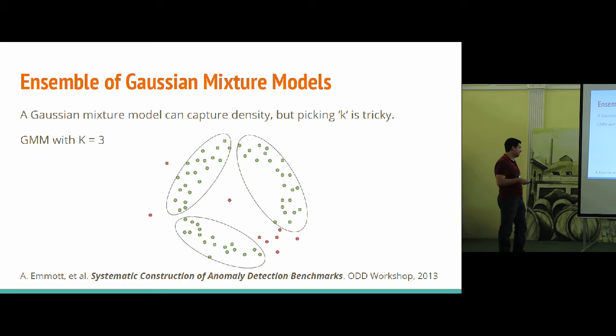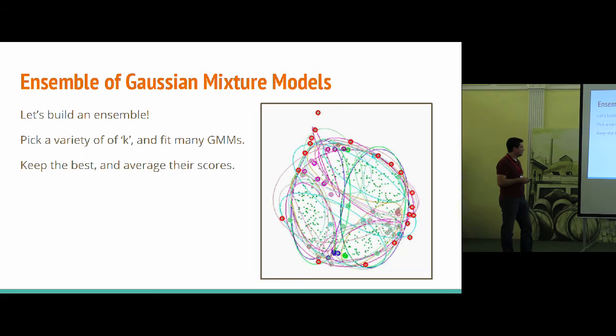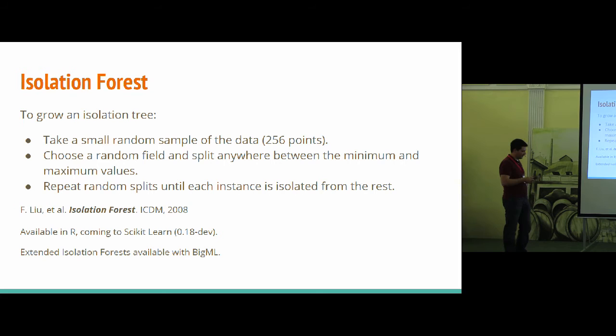And there's also the ensemble of Gaussian mixture models. This was actually created by Tom Dietterich and Andrew Emmett in part of their work with DARPA and this paper they did for benchmarking. But the idea here is, okay, let's fit a Gaussian mixture model to our data. And again, we have a magic k we need to pick. So in this case, we picked three. We fit the Gaussians using EM. And you can sort of see the decision boundaries that fall out. And it can work okay if you pick the right k. But again, who likes that? That's no good. So instead, we'll just make an ensemble out of it. And we'll pick just a variety of k, fit each one with EM, do a whole bunch of them. We'll throw out the ones that didn't fit the data very well. We'll keep some of the better ones. And then we'll use that entire ensemble to give us an idea of how regular a point looks.